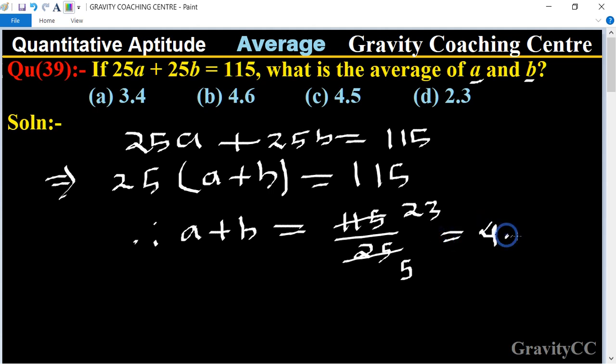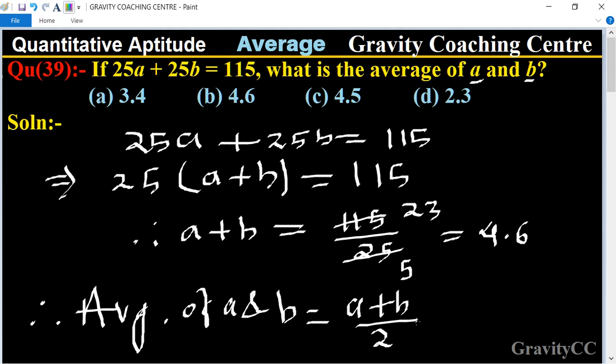Therefore average of a and b equal to a plus b upon 2. And the value of a plus b is 4.6 upon 2, so it is canceled by 2.